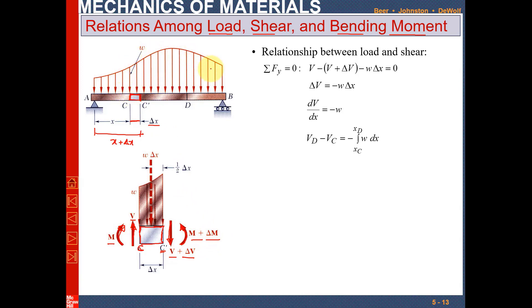There is a random load over the entire beam. Since delta x is very very small, this load will be treated as a uniformly distributed load — approximately rectangular in area. Let this load be w. To convert this uniformly distributed load into a concentrated load, multiply w by delta x. This concentrated load w·delta x acts at the mid of this section.